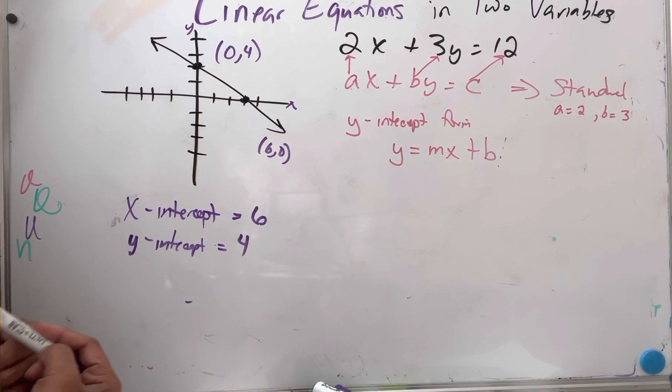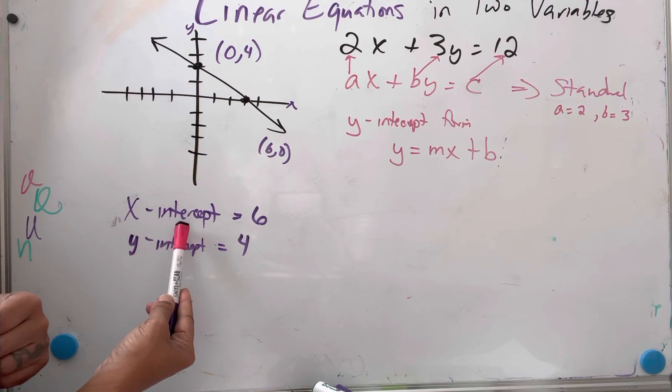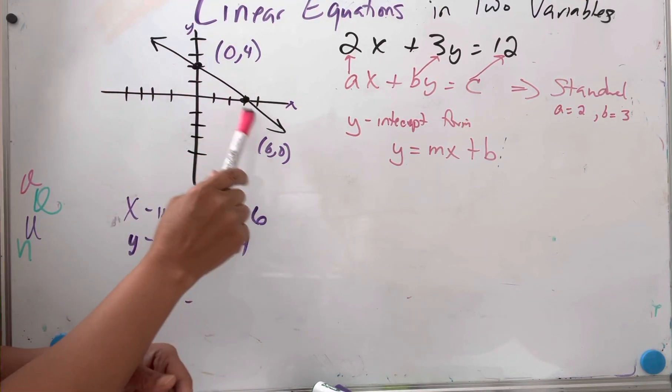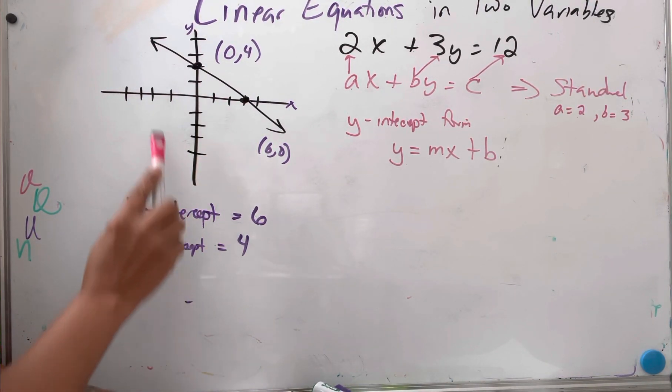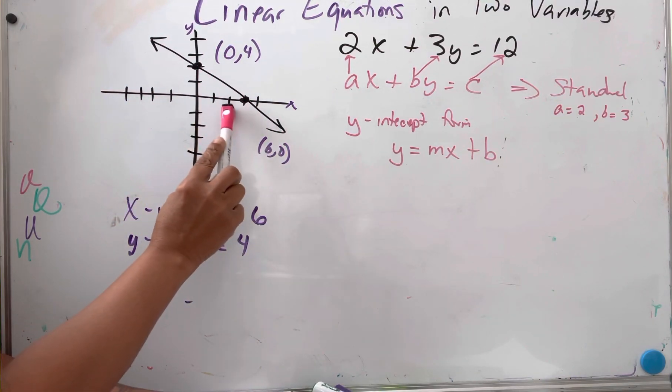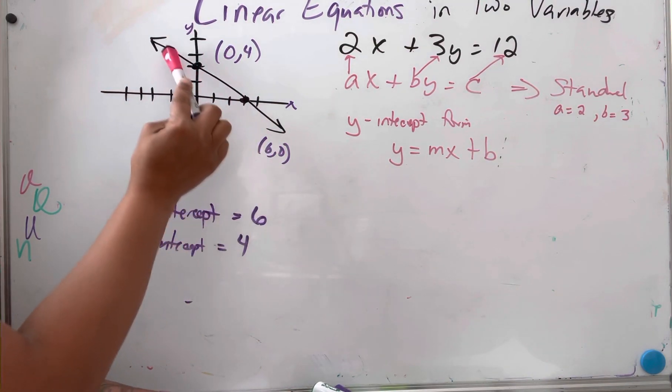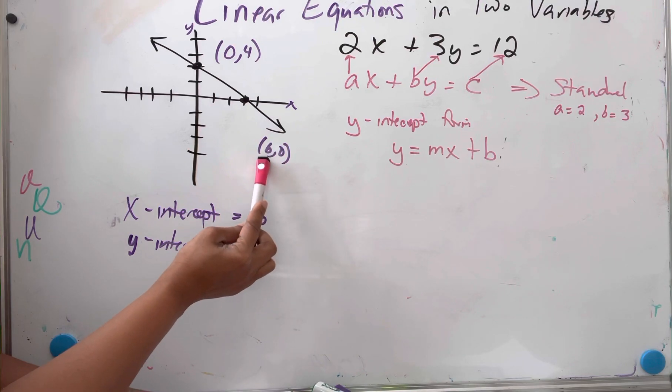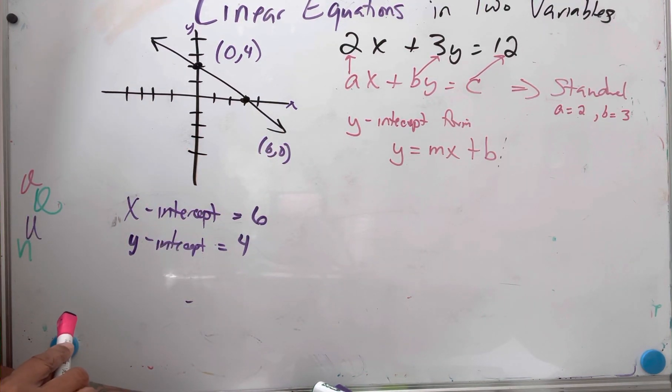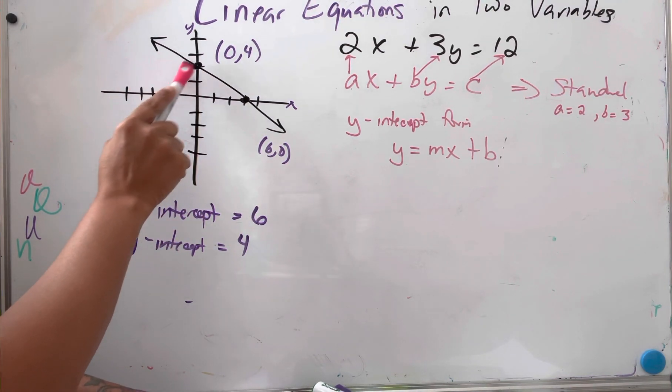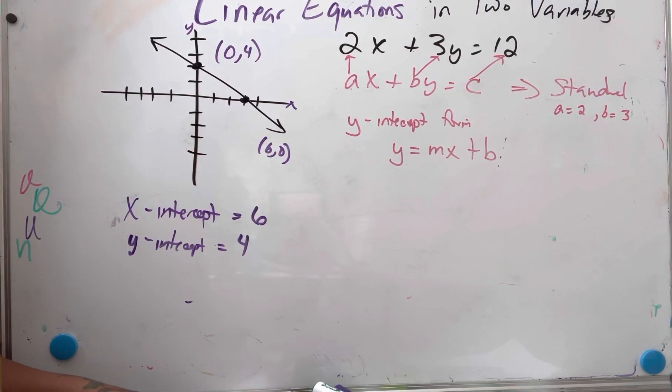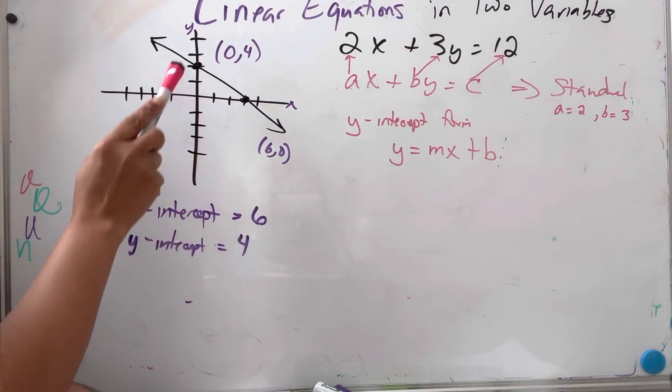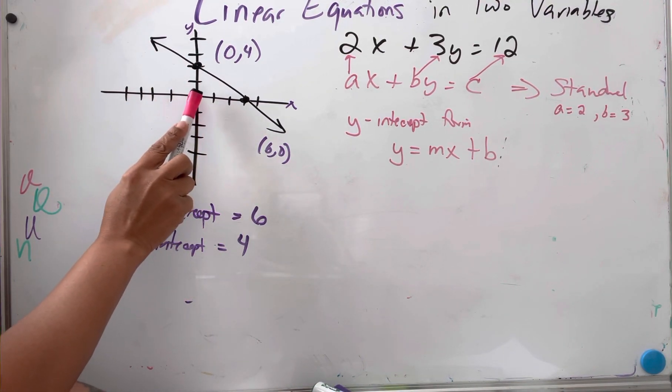Now let's talk about the y-intercept form and what that word intercept means. Intercept means where does it cross. The x-intercept is where the line crosses the x-axis, it crosses at 6. You can see that from the ordered pair when y is zero, x is six. So the x-intercept is 6. When x is zero, that's my y-intercept, so my y-intercept is 4 because if x is zero, then y is 4.